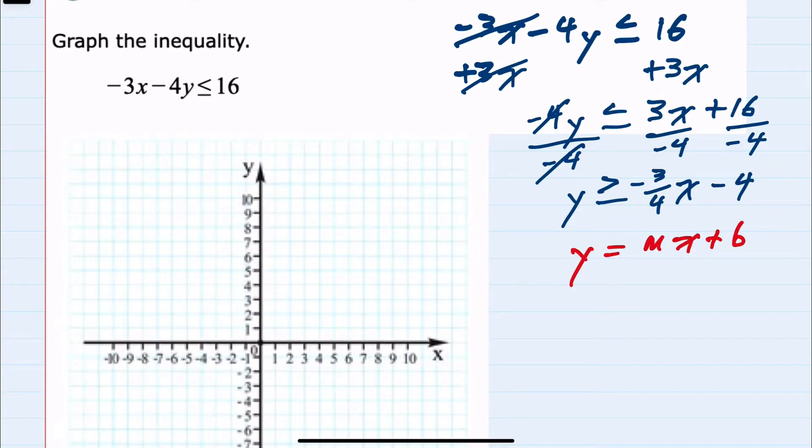We have our y = mx + b form where the y-intercept is -4. On the graph, we cross the y-axis at -4, and the slope is -3/4.